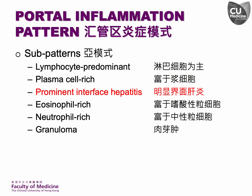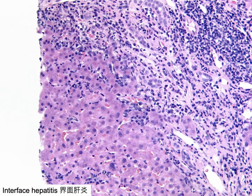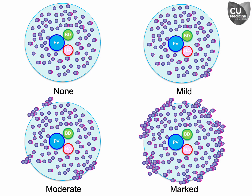Prominent interface hepatitis is another sub-pattern of portal inflammation, demonstrated here by multifocal interface hepatitis breaching the parenchymal-mesenchymal interface. How do we define prominent interface hepatitis? Let's see how we assess the severity of interface hepatitis, i.e., grade the interface hepatitis.